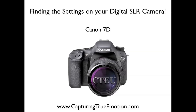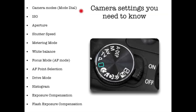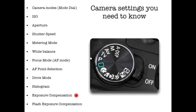Welcome to finding the settings on your digital SLR camera with Capturing True Emotion. My name is Val Westover and we're going to locate the settings on the Canon 7D. These are the settings I feel are important to know if you want to start having more control over your exposure: camera modes, ISO, aperture, shutter speed, metering mode, white balance, focus mode, autofocus point selection, drive mode, histogram, exposure compensation, and flash exposure compensation.